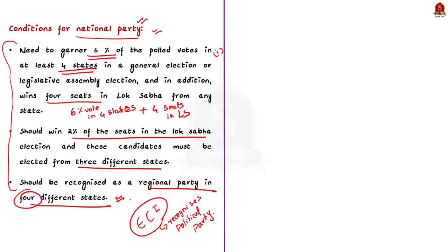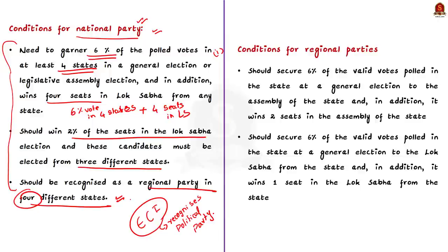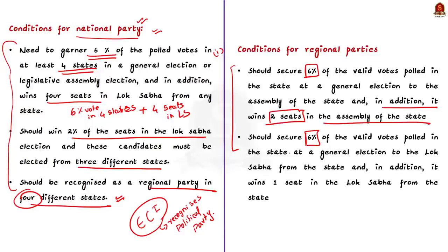Now coming to the recognition of regional parties. If any of the following conditions are satisfied, a political party can be called a regional party. The first condition is that the party should secure 6% of valid votes polled in the state legislative assembly election and also win 2 seats in the state assembly. The second condition is that the party should secure 6% of valid votes polled in the general election to Lok Sabha from the state and must also win at least 1 seat in Lok Sabha from the state.